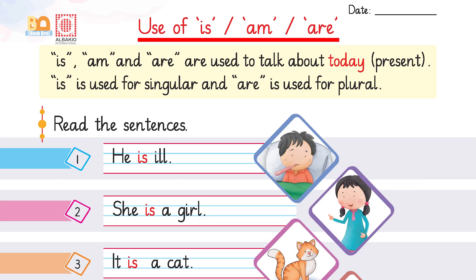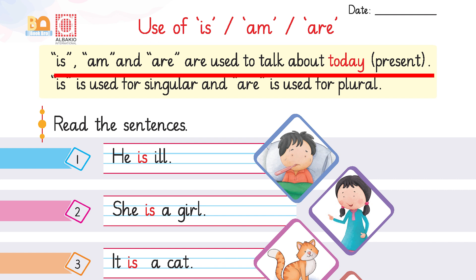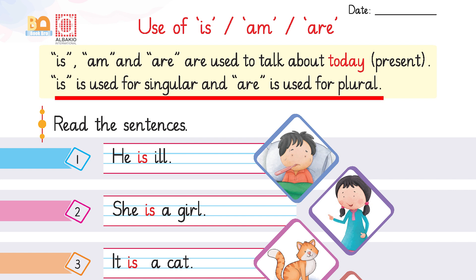Today we are going to learn about the use of 'is', 'am', and 'are'. Is, am, and are are used to talk about today, to talk about the present. 'Is' is used for singular and 'are' is used for plural. And we use the word 'am' with the word 'I' only.